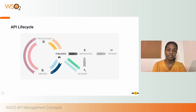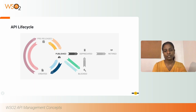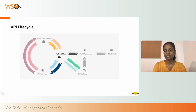The published state is where your API is published to external users and is ready to be subscribed to and consumed. The blocked state is where access to the API is temporarily blocked — runtime calls will be blocked and the API will not be visible to external users. For example, if you detect a misbehavior in your API, you might need to temporarily block it until it is fixed.